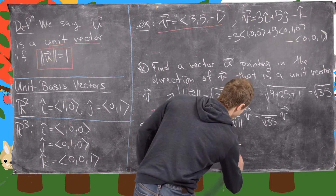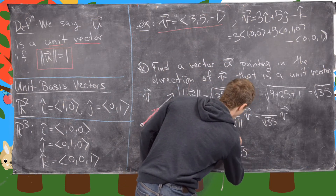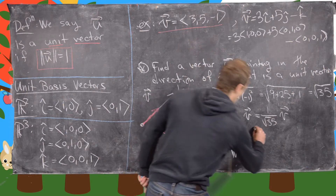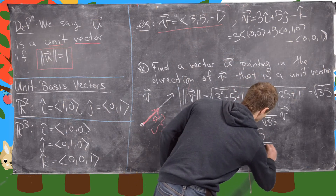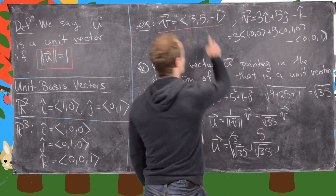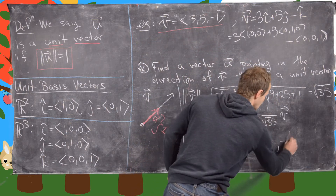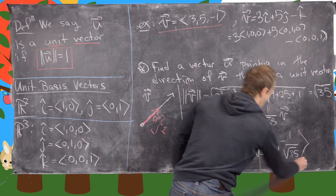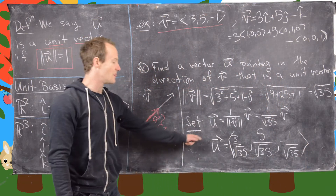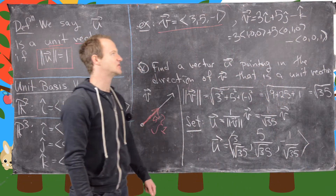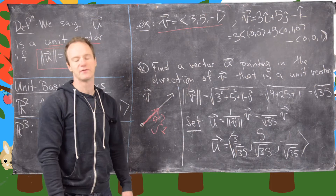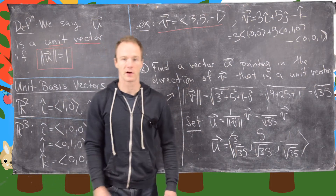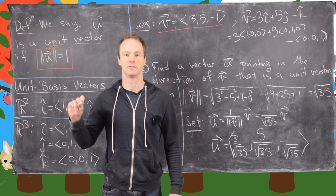Writing that out by multiplying 1/√35 into each component, we get u = (3/√35, 5/√35, -1/√35). We could also rewrite this using i, j, k notation, but we won't do that here. Let's clean up the board and look at another example.